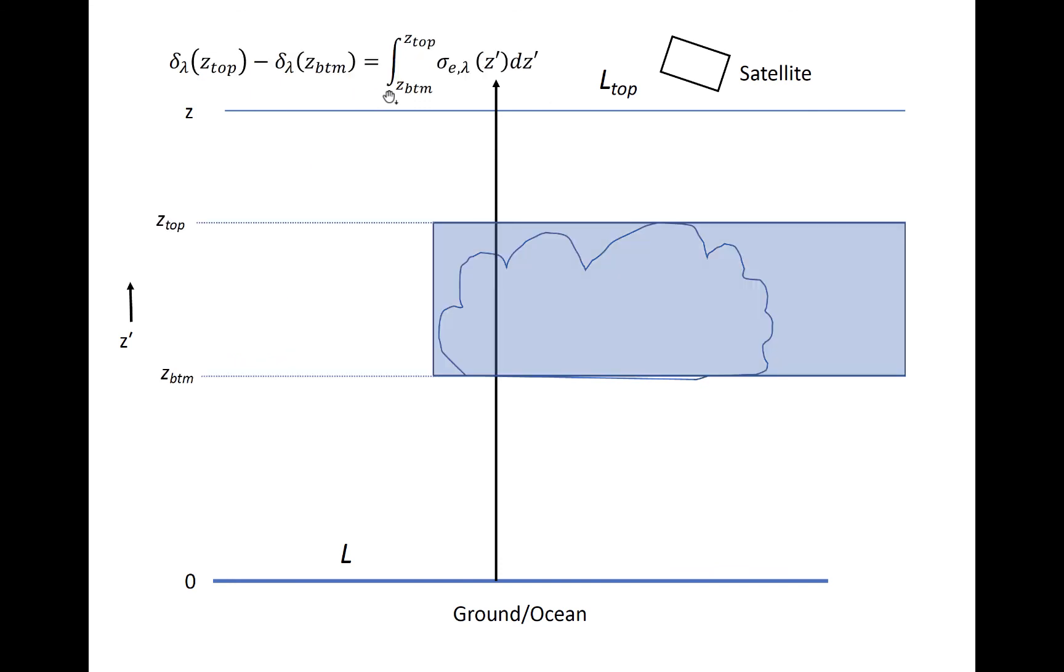We can also compute the optical depth of the layer that isn't the entire depth of the atmosphere. For example, suppose we want to know the optical depth of the cloud layer in the blue box. Then we simply integrate from the bottom of the cloud to the top of the cloud.